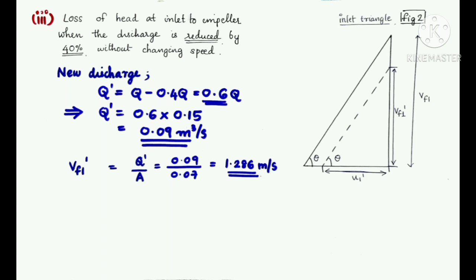The new discharge is 40% lesser than the earlier discharge and is given by Q' = 0.09 m³/s. Thus, from the formula, we get Vf1' = Q'/A which is equal to 0.09 m³/s / 0.07 m² = 1.286 m/s.